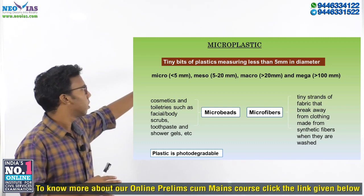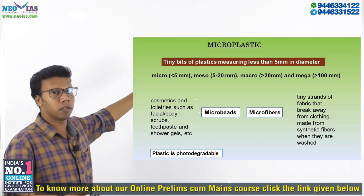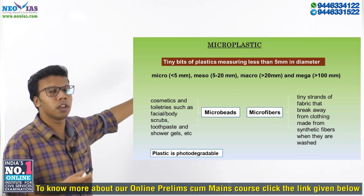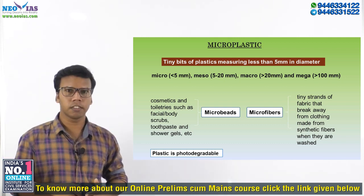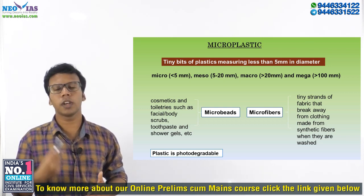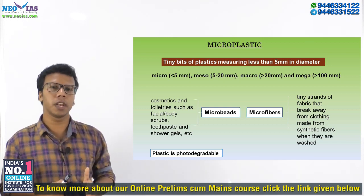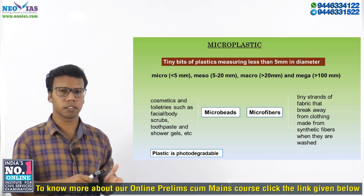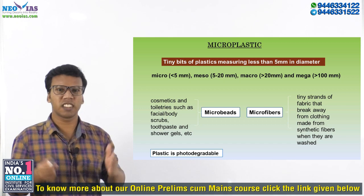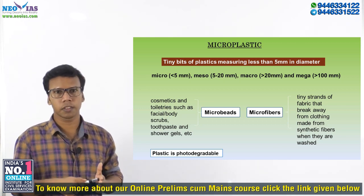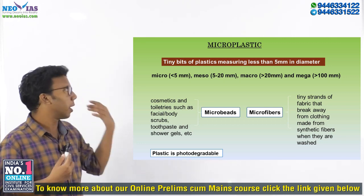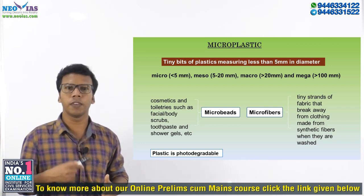Out of this, microplastic is having much more importance because it is having more environmental impact. A 2017 report by the United Nations Environment Programme concluded that around 1.5 million tons of microplastics are entering ocean waters every year.